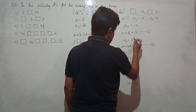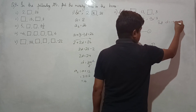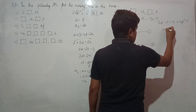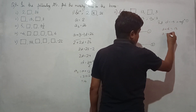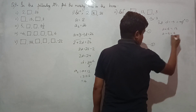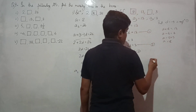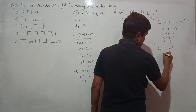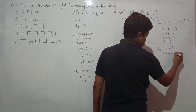Put d equals minus 5 into equation 1: a plus d equals 13, so a minus 5 equals 13, giving a equals 18. The third term equals a plus 2d, which is 18 plus 2 times minus 5.